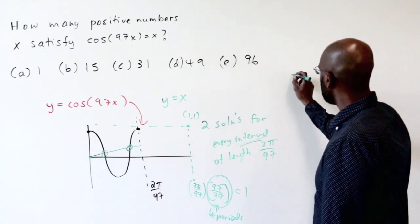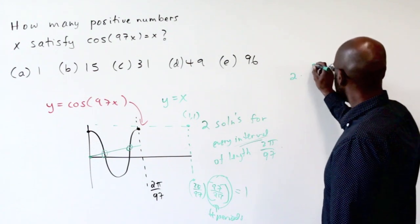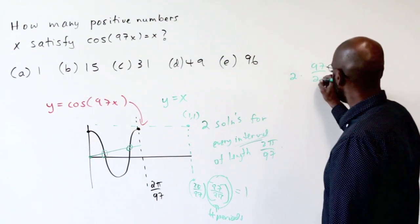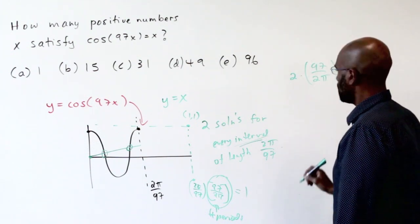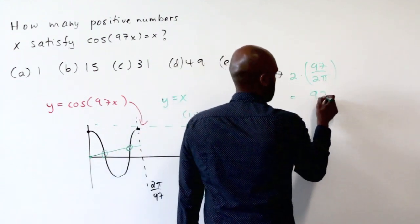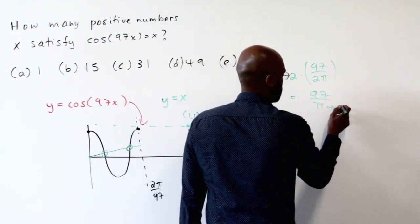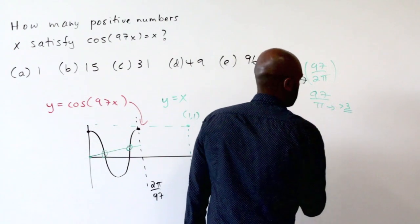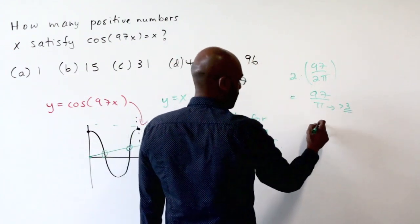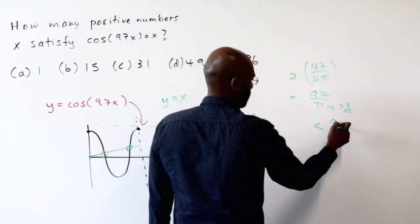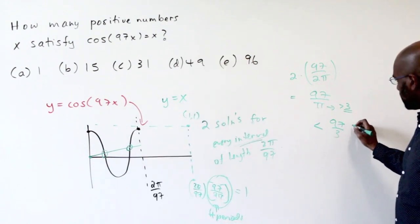Alright, so the number of solutions should then be 2 times 97 over 2pi, roughly. This is 97 over pi, and pi is roughly a little bit greater than 3. So this thing should be a little bit less than 97 over 3.